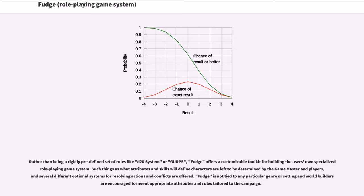Rather than being a rigidly predefined set of rules like D20 System or GURPS, Fudge offers a customizable toolkit for building the user's own specialized role-playing game system. Such things as what attributes and skills will define characters are left to be determined by the game master and players, and several different optional systems for resolving actions and conflicts are offered. Fudge is not tied to any particular genre or setting, and world builders are encouraged to invent appropriate attributes and rules tailored to the campaign.